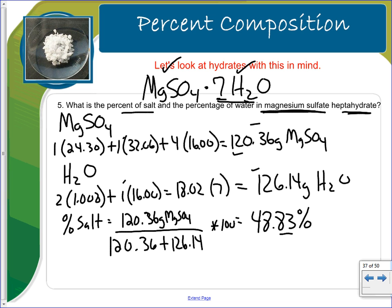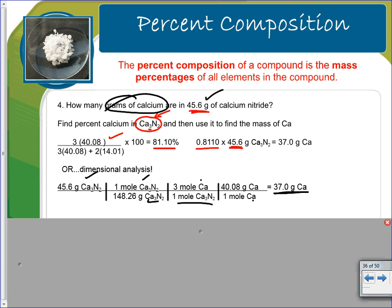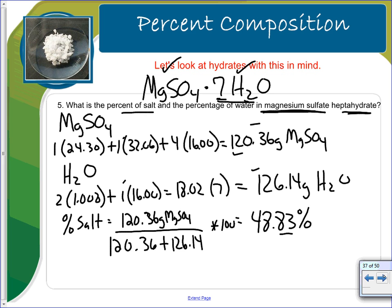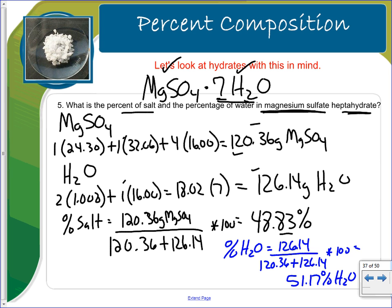When we were doing that, notice how I had it out two decimal places here. And over here, I did two decimal places. By convention, when we're writing the percentages, we carry out two decimals. And I know you could say 100 minus that and get it, but I'm just going to do the whole thing. So it's going to be 126.14 over the 120.36 plus 126.14 times 100. And there I get 51.17 percent is water.